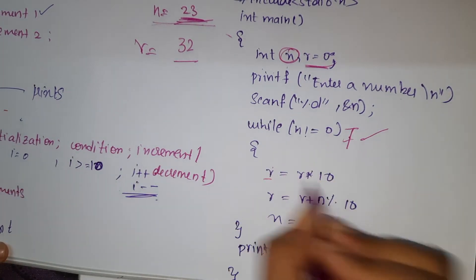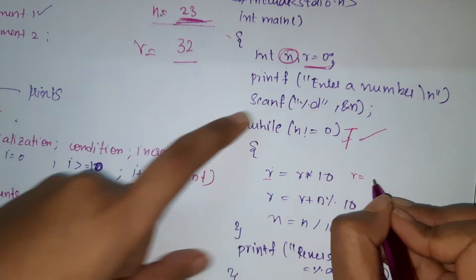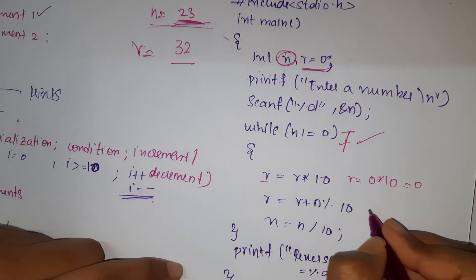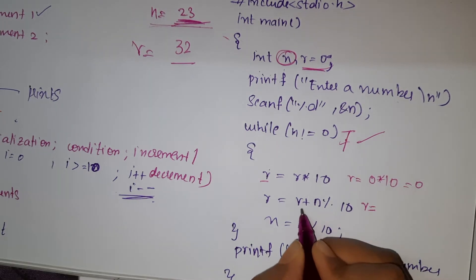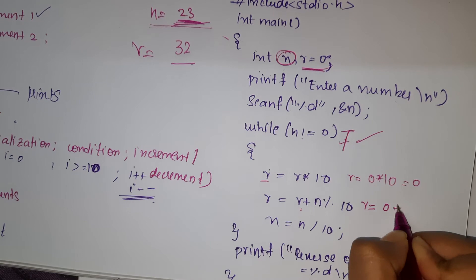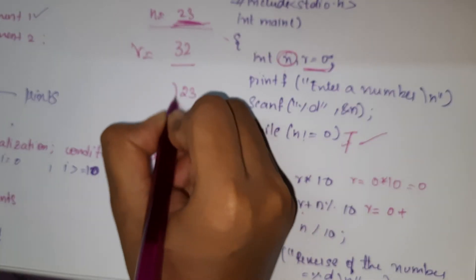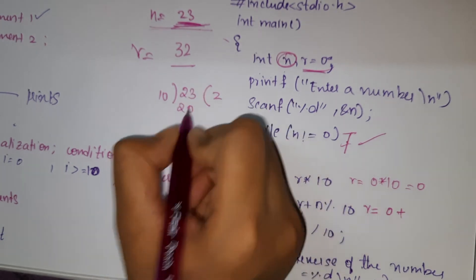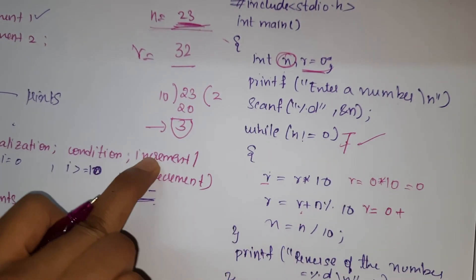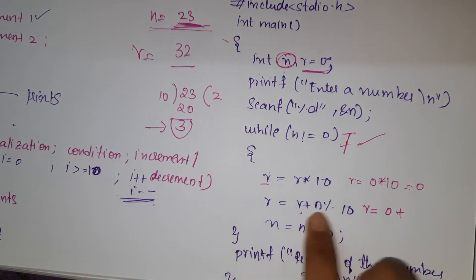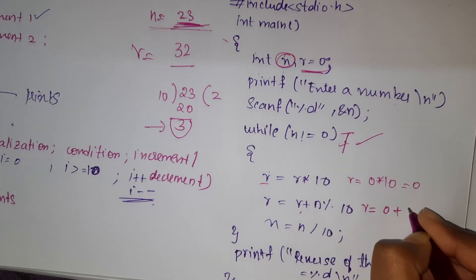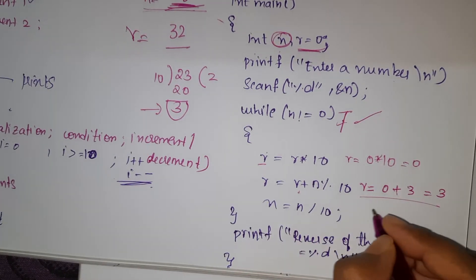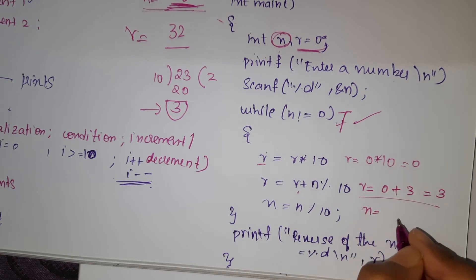Here is the logic to reverse a number. r equals r star 10 plus n percent 10. The current value of r is zero, so zero star 10 is zero. Then n percent 10: for n equals 23, the remainder of 23 divided by 10 is 3. So r becomes zero plus 3, which is 3. Now current value of r is 3. Then n equals n divided by 10: 23 divided by 10 gives quotient 2, so n becomes 2.